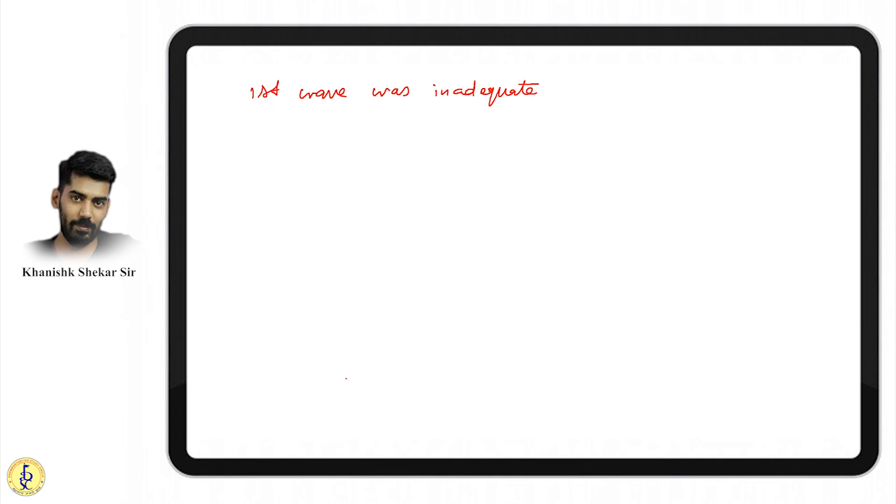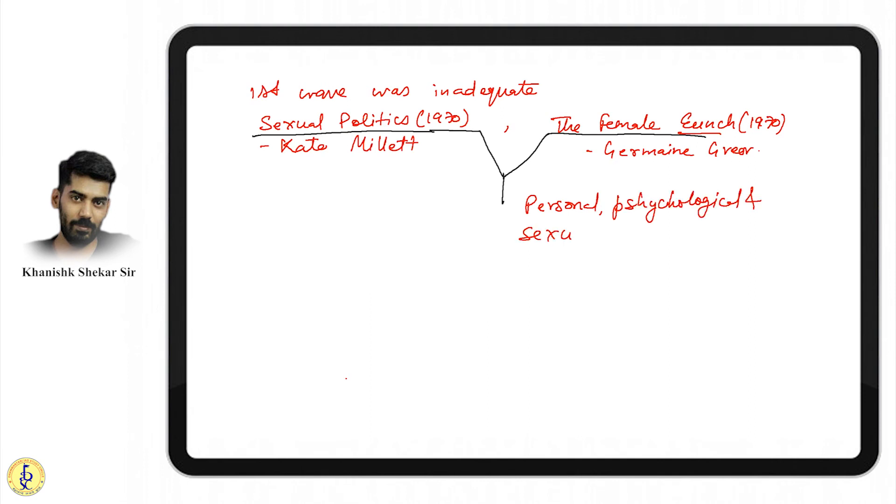Sexual Politics by Kate Millett in 1970 was very radical, and The Female Eunuch by Germaine Greer. These books radicalized the movement. Earlier it was a political issue; now they said it's personal, psychological, and sexual. All these aspects of female oppression were emphasized.